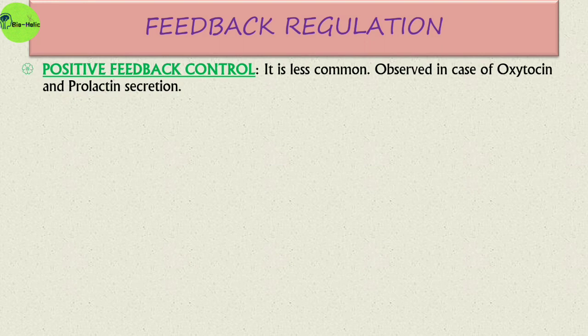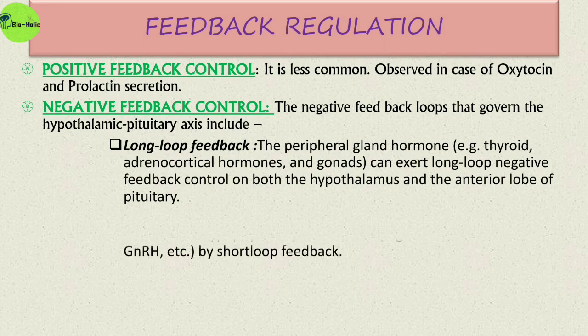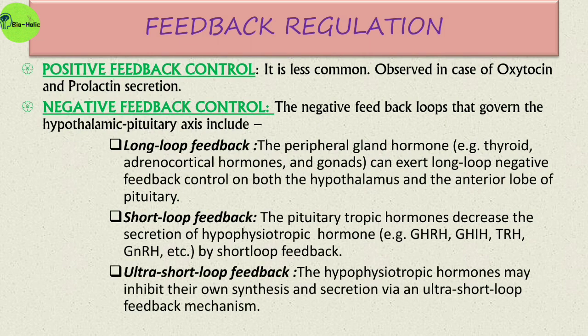We have already learned about positive feedback control — it is less common and is observed in the case of oxytocin and prolactin secretion. The negative feedback control loops governing the hypothalamic-pituitary axis include long loop feedback, short loop feedback, and ultra-short loop feedback. The peripheral gland hormone can exert long loop negative feedback control on both the hypothalamus and the anterior pituitary. Pituitary tropic hormones decrease the secretion of hypophysiotropic hormones via short loop feedback. Hypophysiotropic hormones may inhibit their own production via an ultra-short loop feedback mechanism.